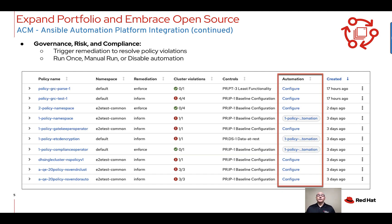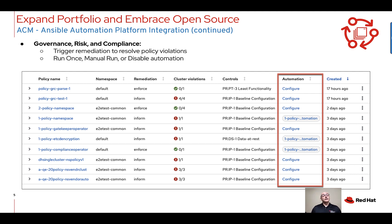One of the things that you can also do through the governance, risk, and compliance engine — this is the Red Hat Advanced Cluster Management policy engine where we perform governance, risk, and compliance type activities — is trigger Ansible job templates on a violation. So when a policy violation is detected you can trigger an Ansible job template as well. You simply go to the automation column that you see here, click on configure, and choose the Ansible job template that you want to trigger.